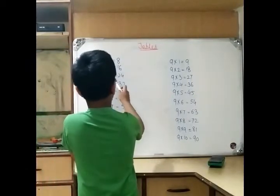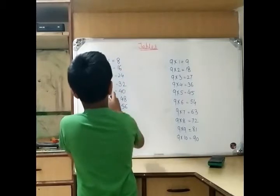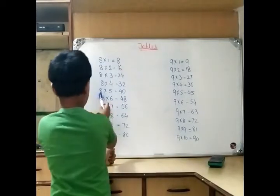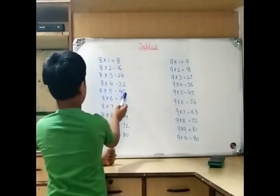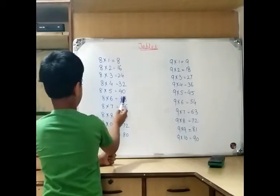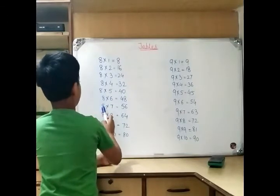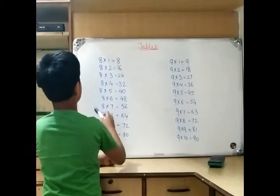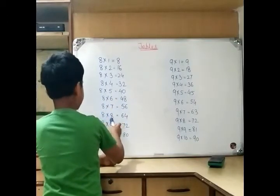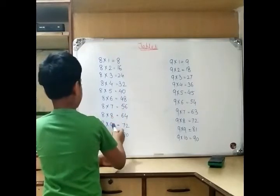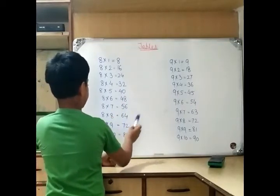3 8s are 24, 4 8s are 32, 5 8s are 40, 6 8s are 48, 7 8s are 56, 8 8s are 64, 9 8s are 72.